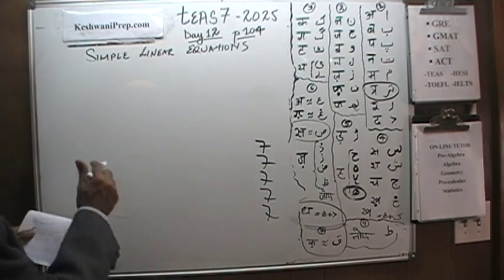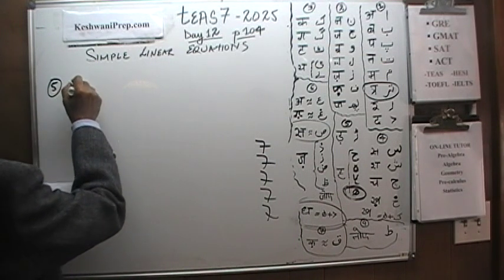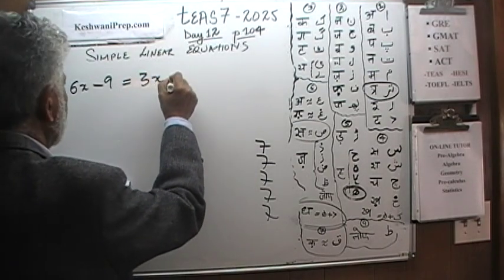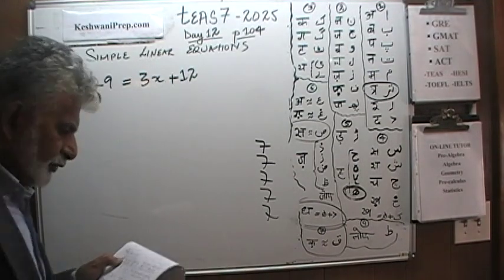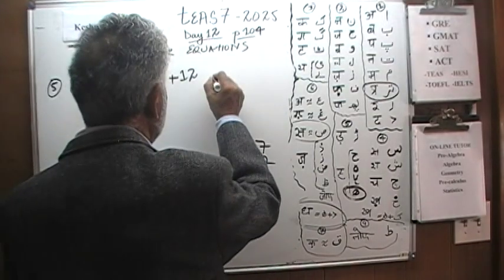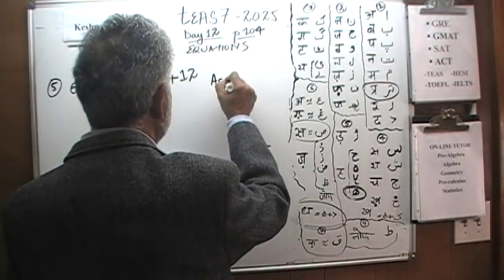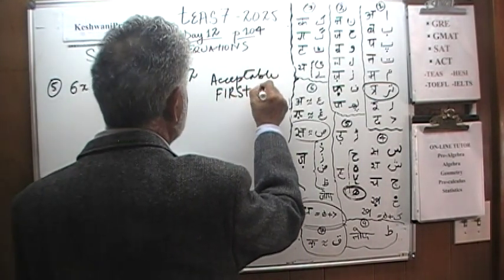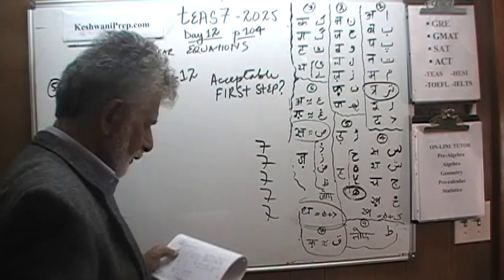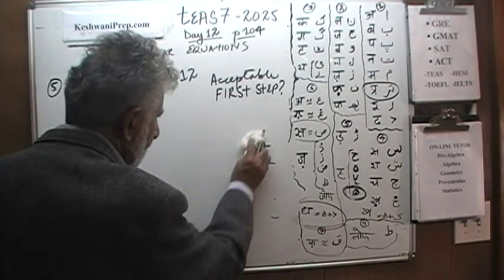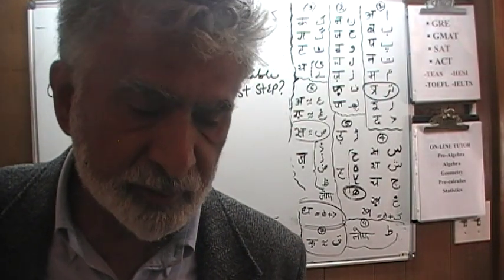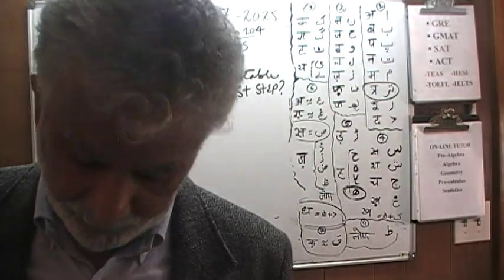Number 5. We have the equation 6x minus 9 equals 3x plus 12. The question is: what is an acceptable first step? There are four answer choices, and we have to pick one that might be considered an acceptable first step. Let's talk about it.